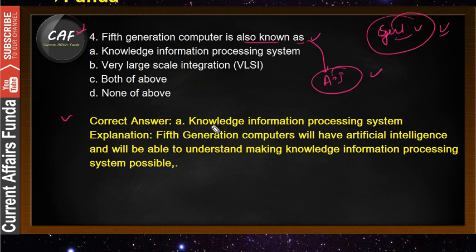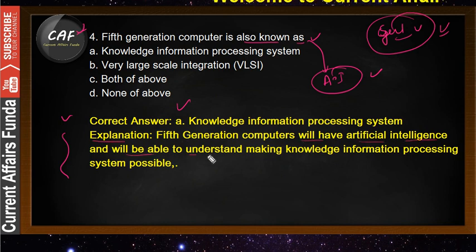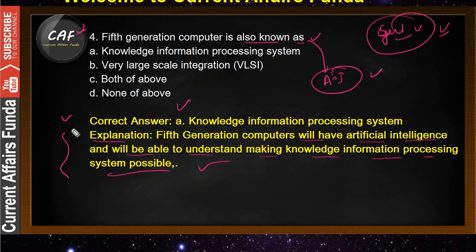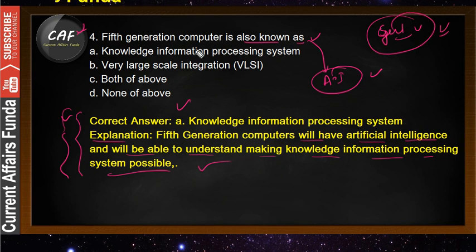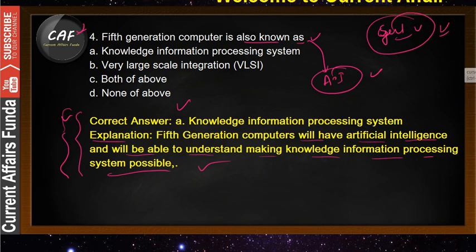Fifth generation computers will have artificial intelligence and will be able to understand, making a knowledge information processing system possible. This will be very interesting in the upcoming generation. We need to know that fifth generation computers are associated with artificial intelligence — if you know the theory portion, you can easily answer.